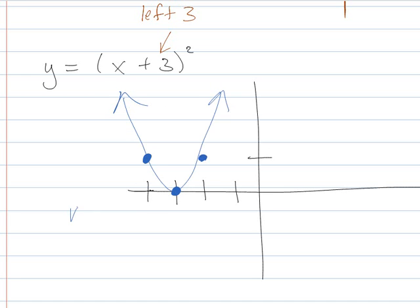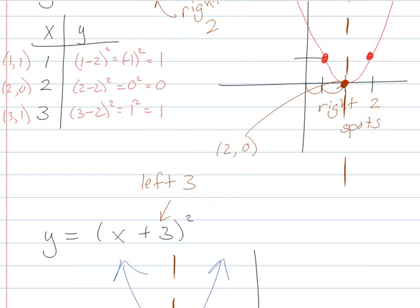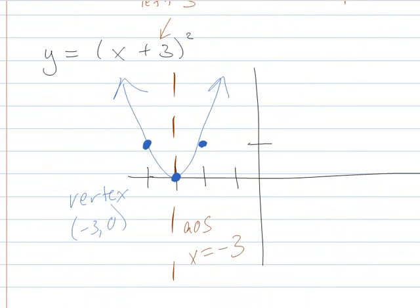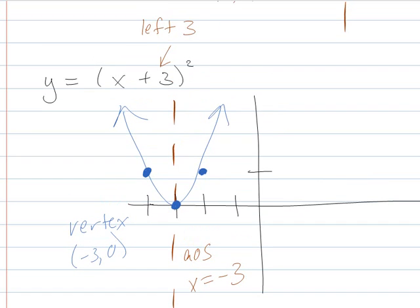So my new vertex is at negative 3, 0, and my axis of symmetry is x equals negative 3. Wait a second. I didn't do this right. Try it again. Negative 3, 0. Oh, did I do that wrong again? No, I did it right there. So your vertex is now negative 3, 0. Your axis of symmetry is x equals negative 3.